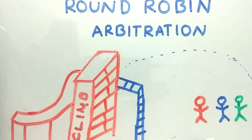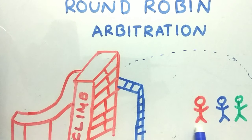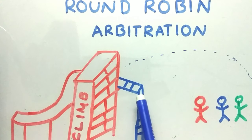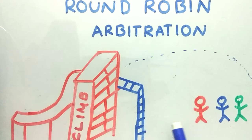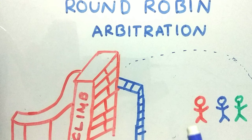We have equal priority for each of them and each of them can access this slide until they come down. One person can take five minutes to climb and slide down, and the blue person can take one minute to climb and slide down. So each of them are getting their turns, but the usage of the slide will be based upon the person's physicality or how fit a person is. This is a basic example on round-robin arbitration.